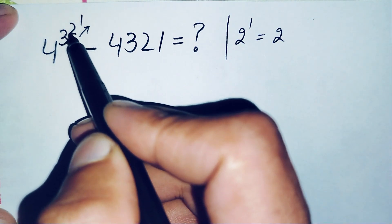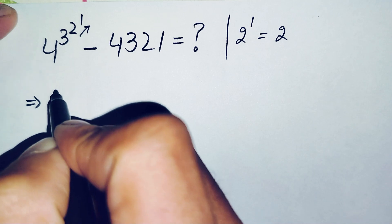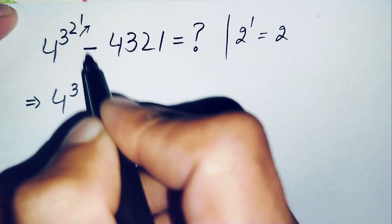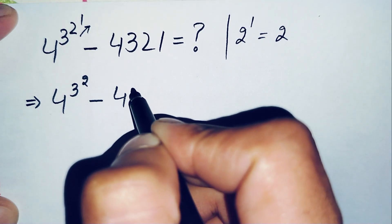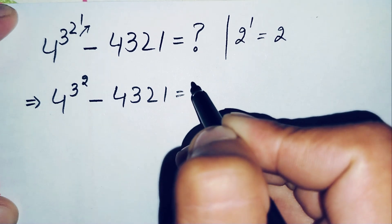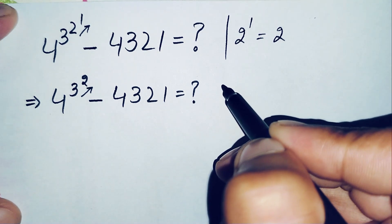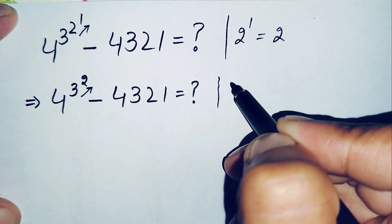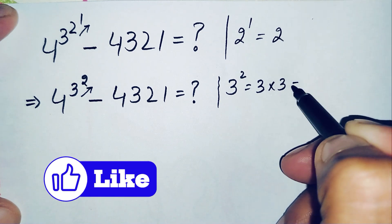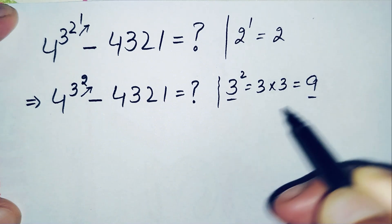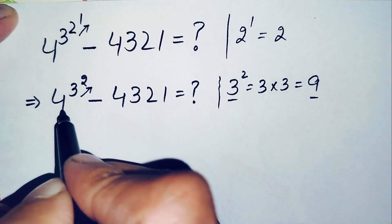We replace 2 raised to power 1 with 2, so this becomes: power raised to power 3 raised to power 2, where the exponent is now simply 2, minus 4321. Next, we solve 3 raised to power 2. That means multiplying the base 3 two times: 3 times 3 is 9. So the value of 3 raised to power 2 is 9.